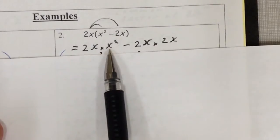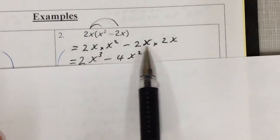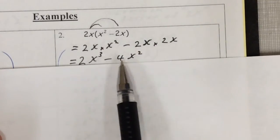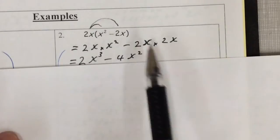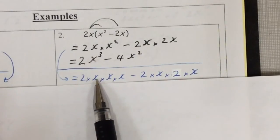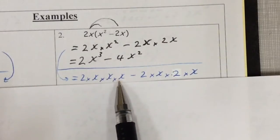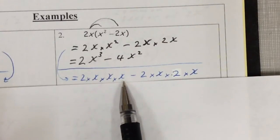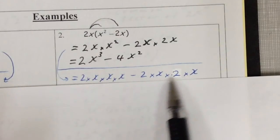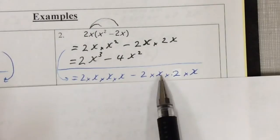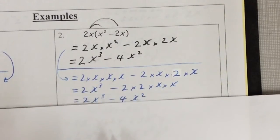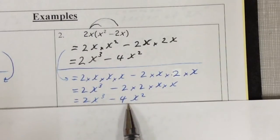The x times x squared gives you x cubed. The x times x gives you x squared, and the 2 times 2 gives you 4. If you want to break this down further, 2x is 2 times x, x squared is x times x — all that multiplied. Then 2 times x times 2 times x — reorder the 2s to the front, x's at the back. So you've got 2x cubed minus 4x squared.